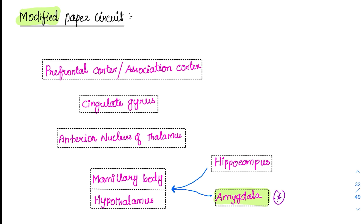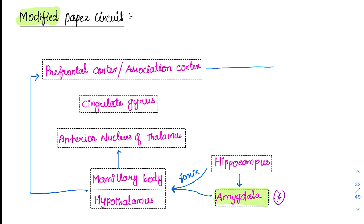From the mammillary body, through the mammillothalamic tract — which we have already seen in the thalamus — it goes to the anterior nucleus of the thalamus. This is the inner circuit, but let's complete the outer circuit first. From the hippocampus, it goes to the amygdala and then to the hypothalamus through the fornix. From the hypothalamus, it can directly go to the prefrontal cortex.